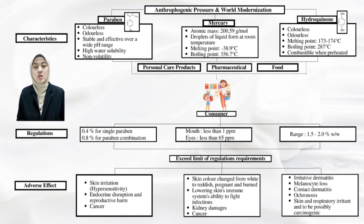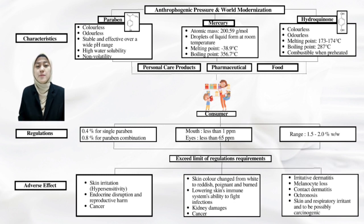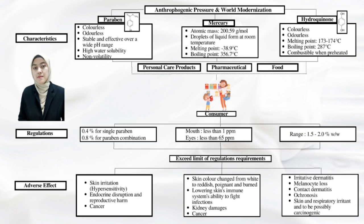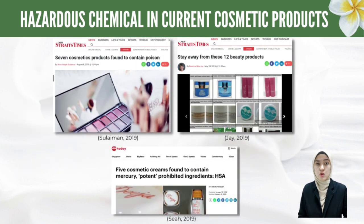Mercury is a heavy metal usually found in whitening lotion that appears grey-white and in liquid state at normal temperature. The melting point and boiling point of mercury are -38.9°C and 356.7°C respectively. Mercury is an active element that prevents melanin development in the skin. Prolonged mercury exposure from frequent cosmetic treatment may affect the brain, neurological and renal system. The food and drug associations consider a cosmetic mercury content to be safe if it is less than 1 ppm for items used around the mouth or less than 65 ppm for goods used around the eyes. Even though there are regulations limiting the use of these hazardous elements, there are still issues related to mercury and hydroquinone.